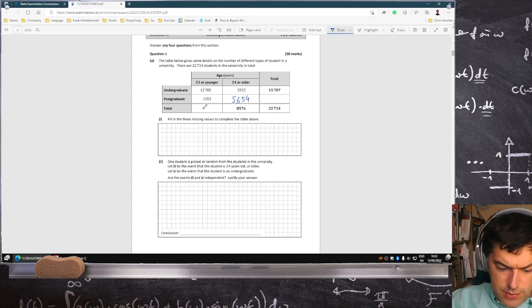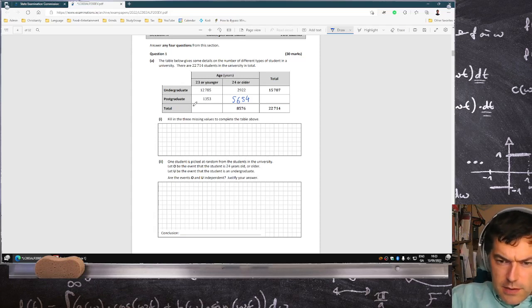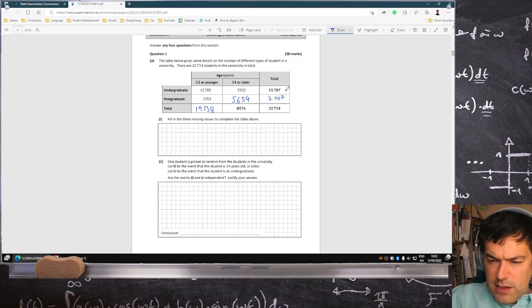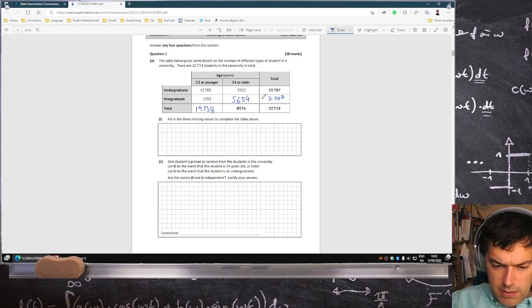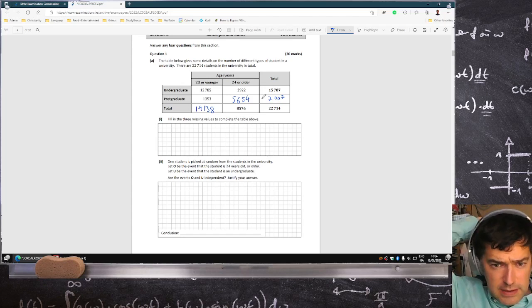12,785 plus 1,353, that's 14,138. And likewise 22,714 minus 15,707, so that's 7,007. You can check that's right because these two should add up to that and these two should add up to it as well. So let's double check: 14,138 plus 8,576 equals 22,714. 15,707 plus 7,007 equals 22,714. Fill in the three missing values to complete the table, and that's done.